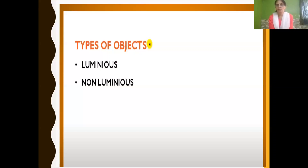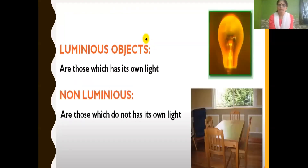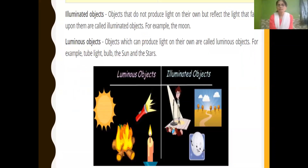Then we have learned about two types of objects: luminous objects and non-luminous objects. Non-luminous objects we can also call illuminated objects. Luminous objects are those which have their own light, which emit their own light.